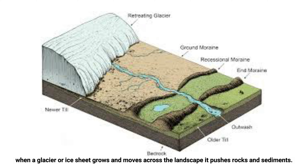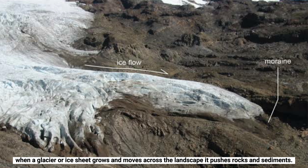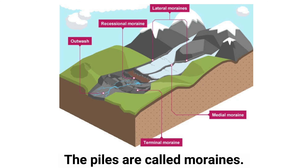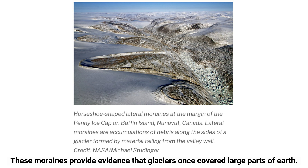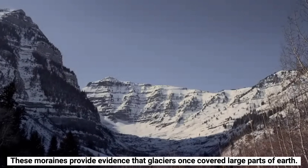When a glacier or ice sheet grows or moves across the landscape, it pushes rocks and sediments. When the glacier melts, it leaves piles of rocks behind. These piles of rocks are called moraines. Moraines provide evidence that glaciers once covered large parts of the Earth.